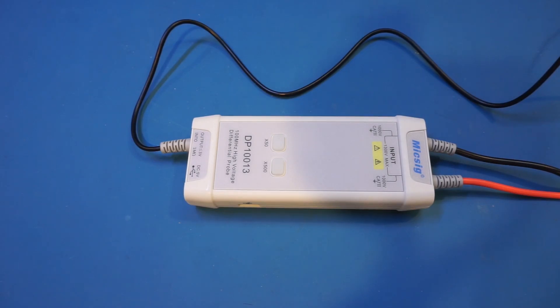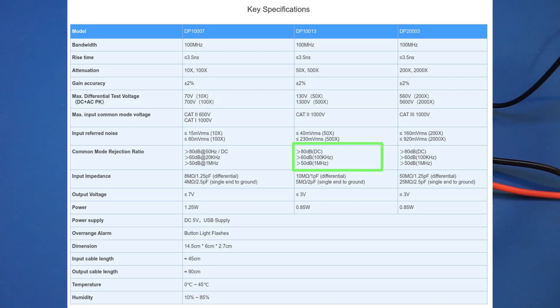If you take a look at the spec for the MixSick DP10013, you will see that the CMRR is specified at greater than 80 dB at DC level, and at greater than 60 dB at 100 kHz, and it further reduces to 50 dB at 1 MHz. Interestingly enough though, it did not specify the CMRR beyond 1 MHz, even though this probe has a bandwidth of 100 MHz.